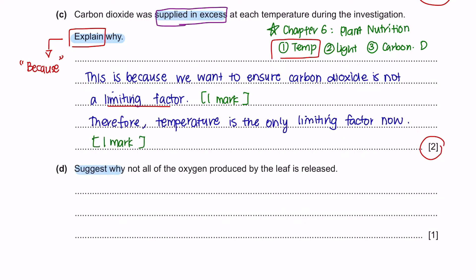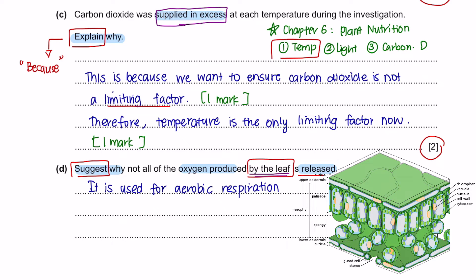Question D. Suggest why not all of the oxygen produced by the leaf is released. Note here that the command word is suggest. We are not expected to know exactly why some oxygen is not being released, but we are expected to apply our knowledge of the structure of the leaf or how oxygen is used in a plant. At night when photosynthesis does not take place, aerobic respiration takes place and oxygen is required for this reaction. So some of the oxygen will be used for aerobic respiration. And if you look at the structure of the leaf, there are air spaces in the spongy mesophyll. So some of the oxygen will remain there.